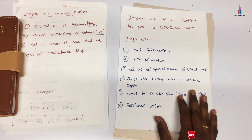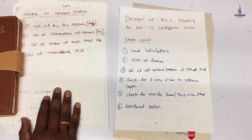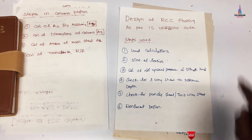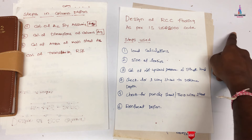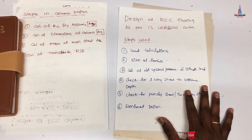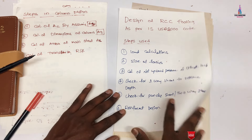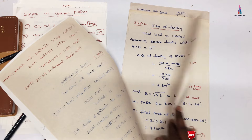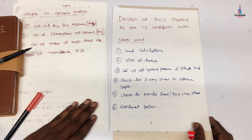In this video lecture, I will explain the design of RCC footing as per IS456:2000 code. In my previous videos, I explained how to design a column section as per IS456:2000 code — that video link is provided above. Now I will explain what parameters we need to consider before designing an RCC footing and what steps to follow in RCC foundation design.